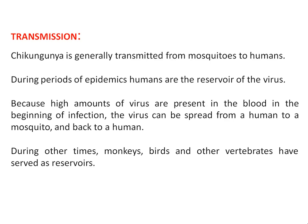Chikungunya is generally transmitted from mosquitoes to humans. During epidemic periods, humans are the reservoirs of the virus — the transmission spreads rapidly from person to person via mosquitoes. High amounts of virus are present in the blood at the beginning of infection, and the virus can spread from one human to a mosquito and then back to humans. During other times, monkeys, birds, and other vertebrates serve as reservoirs.